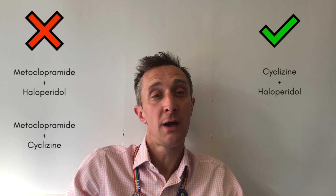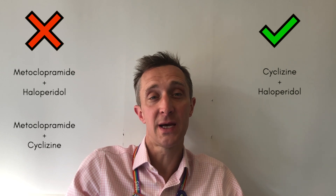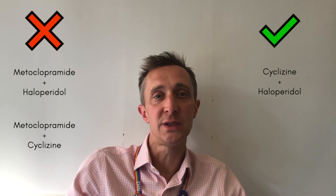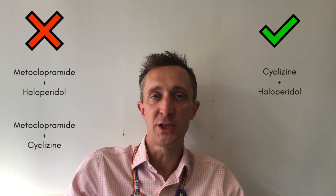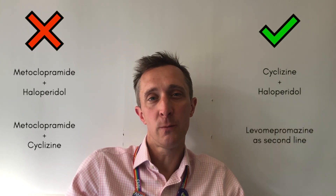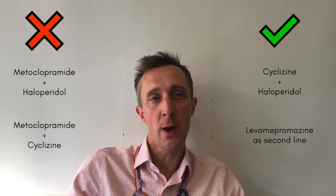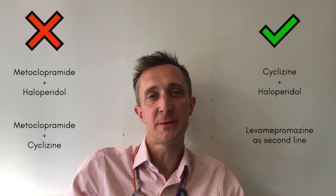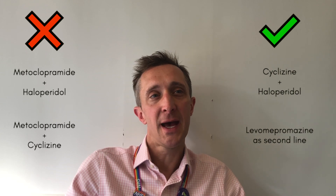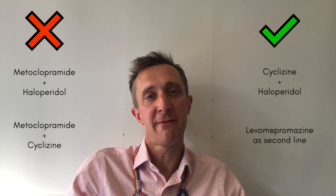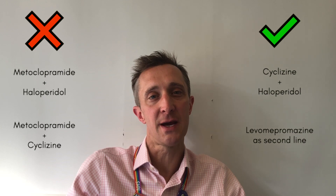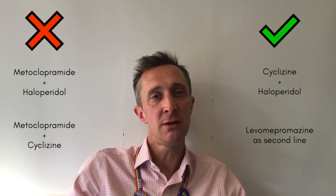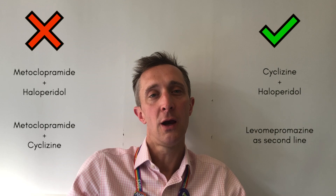Cyclizine and haloperidol are fine to use together — they work in different ways through different receptors and are a good complement to each other. Likewise, levomepromazine, although it works on all the neuroreceptors, tends to have less affinity for each of them than the more specific drugs, so you can use it as a second line alongside any of the others.